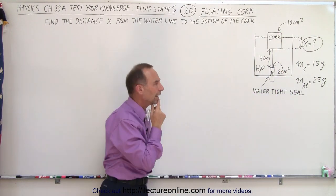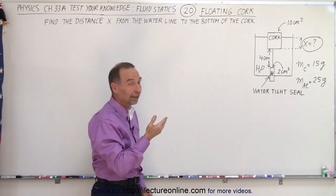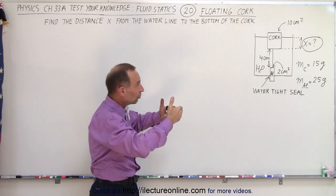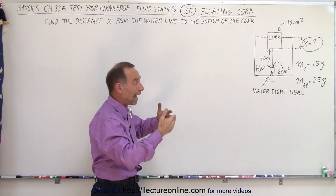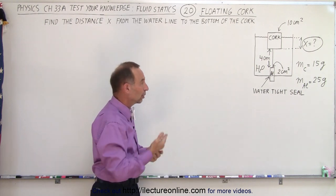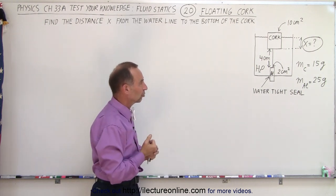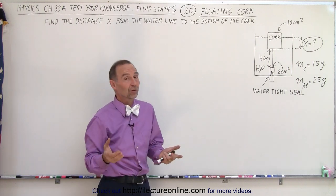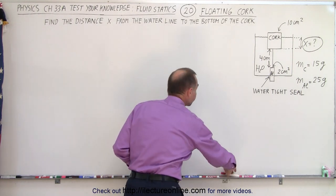How do we figure that out? Well, since it's a static situation, all the forces on the cork and aluminum added together should add up to zero. In other words, the sum of the forces in the y direction should add up to zero. But first of course we need to find what those forces are.